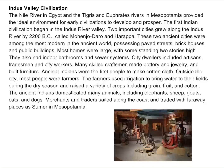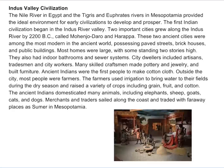Indus Valley civilizations. Just as the Nile River in Egypt and the Tigris and Euphrates Rivers in Mesopotamia provided the ideal environment for early civilizations to develop and prosper, the first Indian civilizations began in the Indus River Valley. Two important cities grew along the Indus River by 2200 BC: Mohenjo-Daro and Harappa. These two ancient cities were among the most modern in the ancient world, possessing paved streets, brick houses, and public buildings. Most homes were large with some standing two stories high. They also had indoor bathrooms and sewer systems. City dwellers included artisans, tradesmen, and city workers.